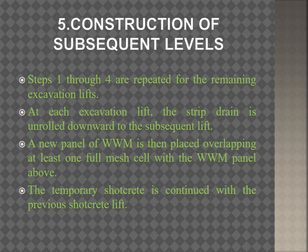Step five is construction of subsequent levels. Steps one to four are repeated for the remaining excavation lifts. At each excavation lift, the strip drain is unrolled downward to the subsequent lift. A new panel of welded wire mesh (WWM) is then placed, overlapping at least one full mesh cell with the panel above, and the temporary shotcrete is continued with the previous shotcrete lift.